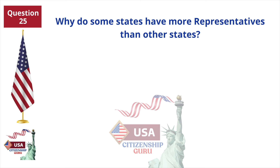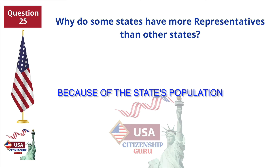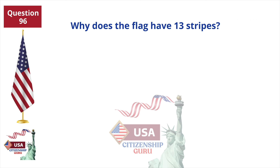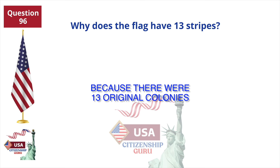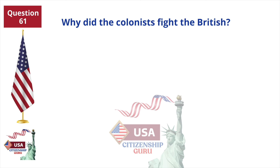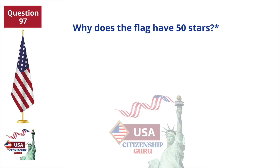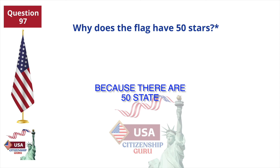Why do some states have more representatives than other states? Why does the flag have 13 stripes? Because there were 13 original colonies. Why did the colonists fight the British? Because of high taxes. Why does the flag have 50 stars? Because there are 50 states.